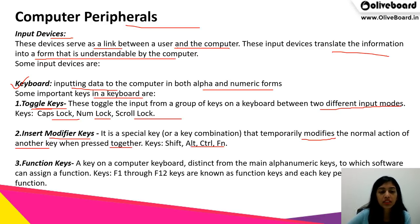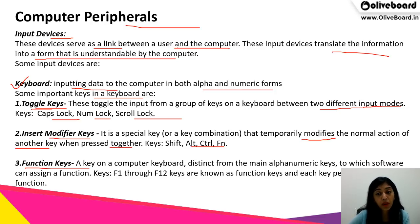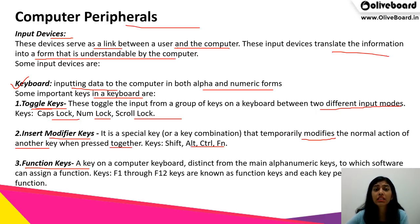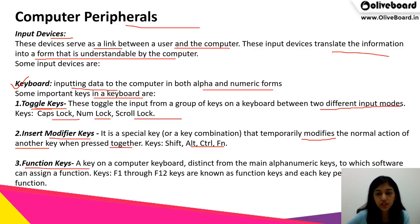The third type is the function key. It is a key on the computer keyboard, distinct from the main alphanumeric keys, to which software can assign a function. The function keys range from F1 to F12, and different functions are assigned to these keys — such as increasing or decreasing brightness, or increasing or reducing the volume.